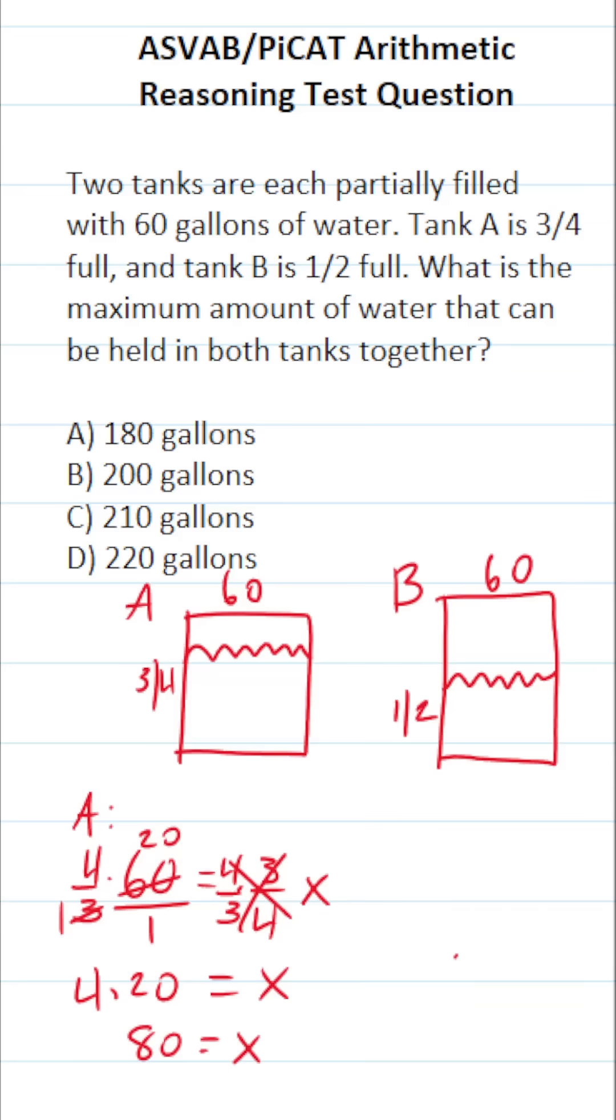So we know the maximum capacity of tank A is going to be 80 gallons. That's the most water that it can hold. And we're going to do the same thing for tank B. 60 gallons is equal to one-half of the maximum capacity of tank B. And I'm going to let that maximum capacity be X.